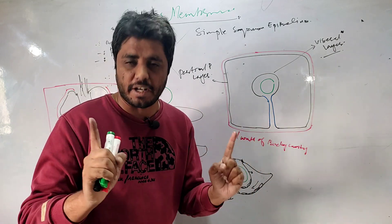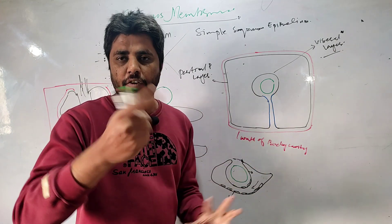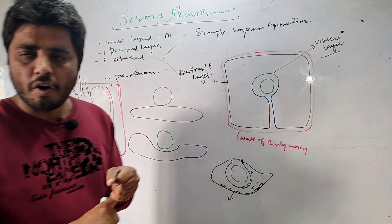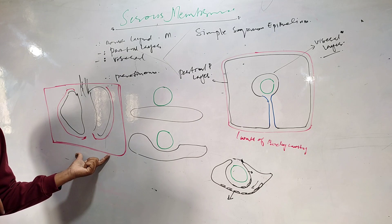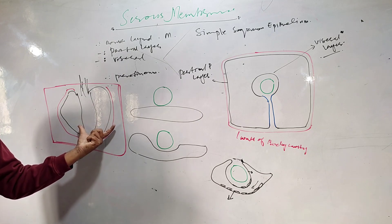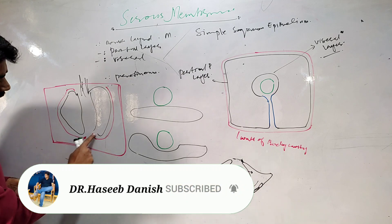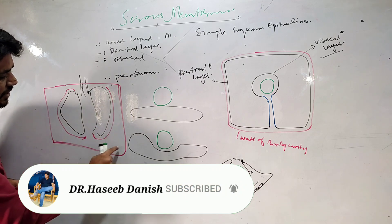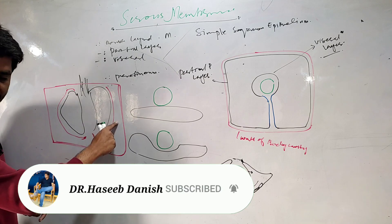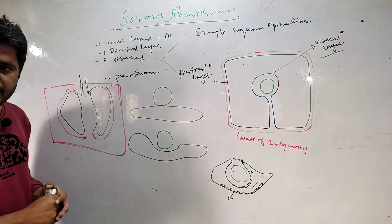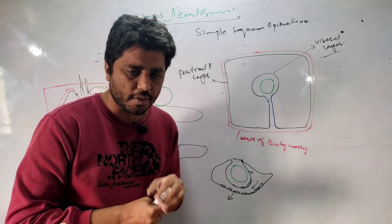We will discuss these in further classes in detail. In the case of the thoracic cavity, if this is the pleural cavity, the line covering this cavity is known as parietal pleura, and the line which is covering the lungs is known as visceral pleura. Thank you very much.